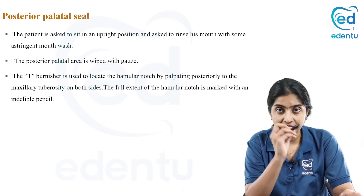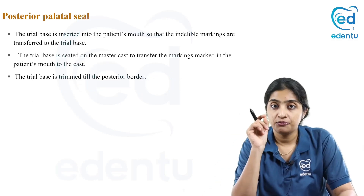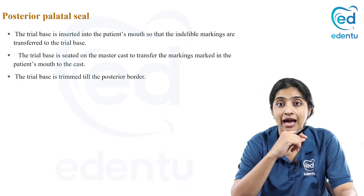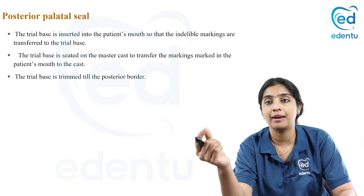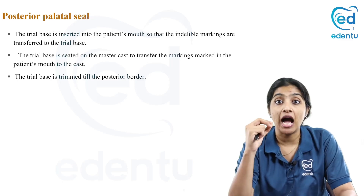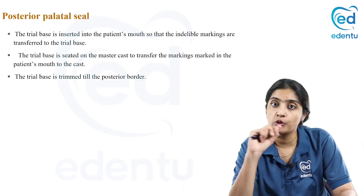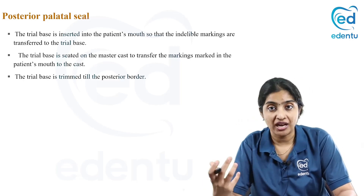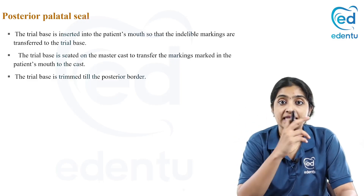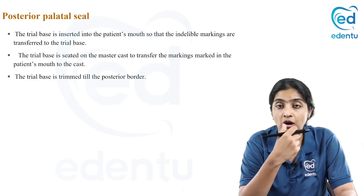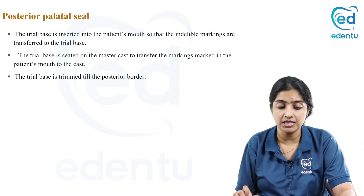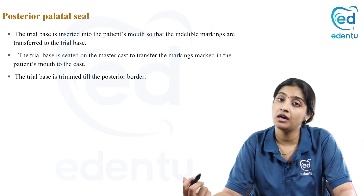You start marking from that point — from the hamlar notch. You ask the patient to say 'ah, ah, ah' in short bursts, and you mark your anterior vibrating line from hamlar notch to hamlar notch using an indelible pencil. Then you ask the patient to say 'ah' on a long note and mark the posterior vibrating line. The trial base is then reinserted into the patient's mouth so that the markings placed in the mouth are transferred onto the denture base. This is then transferred to the master cast and the border of the denture is trimmed accordingly.